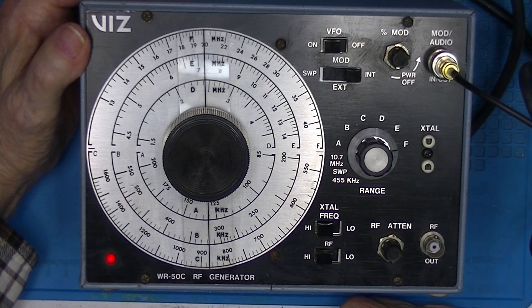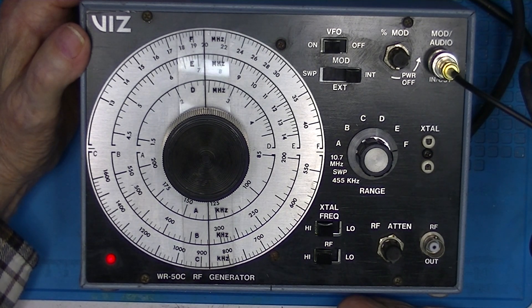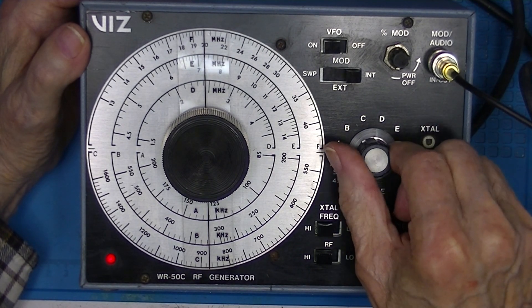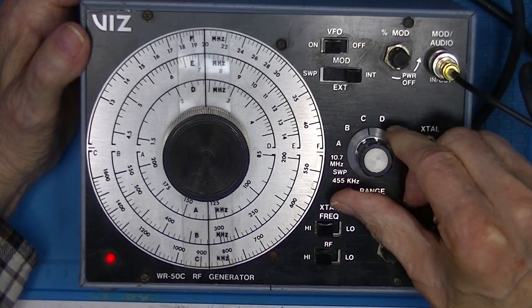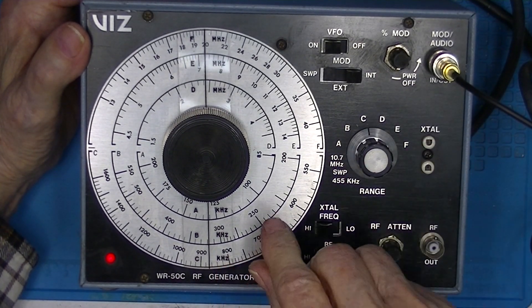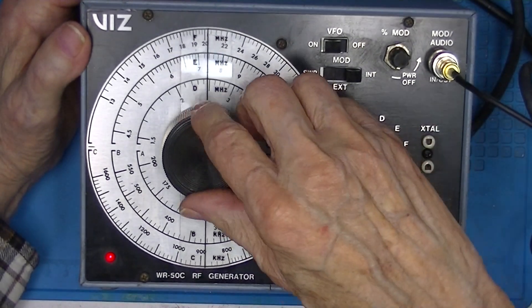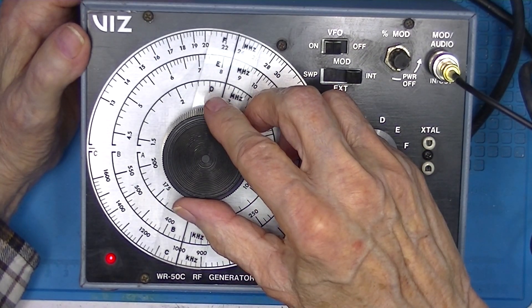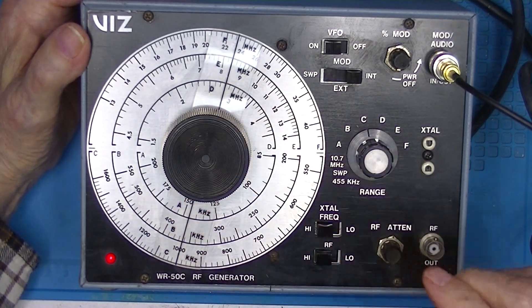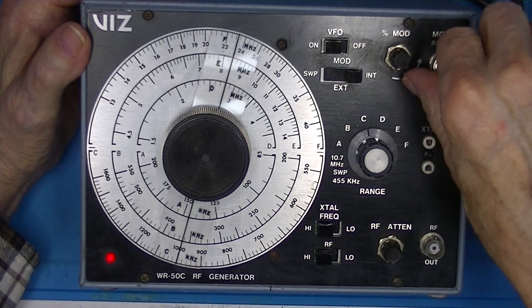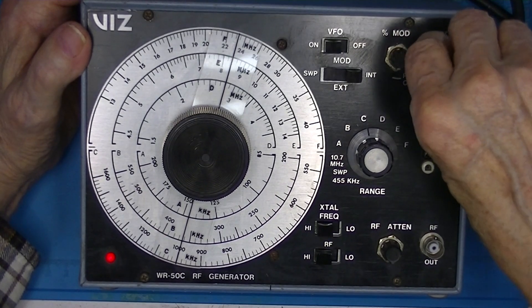Now we'll look at a modulated frequency. And I'm going to go ahead and turn it to C. I'm going to output a 1 megahertz signal.